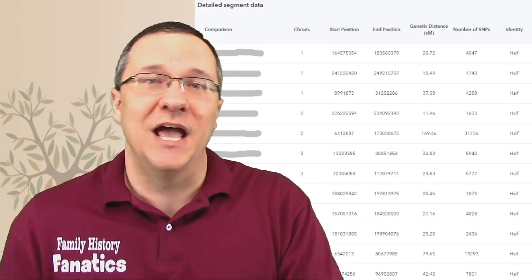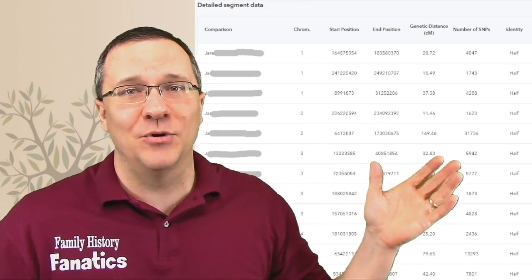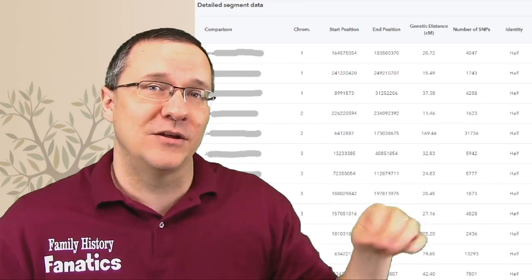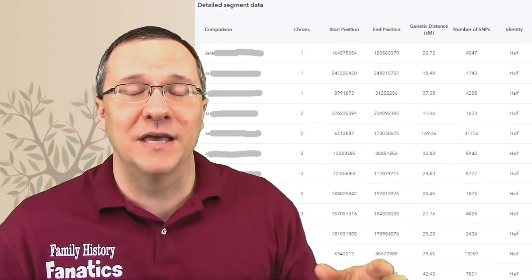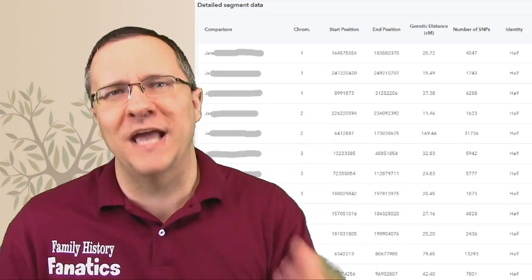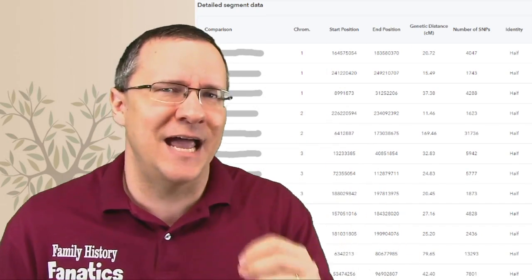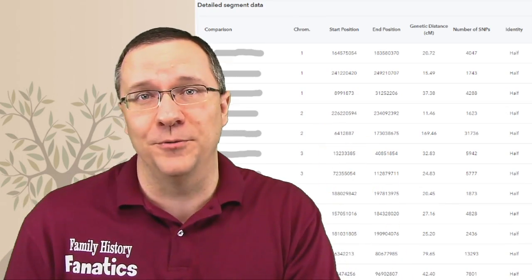At 23andMe, down below the graphic of each one of the chromosomes, there's going to be this table that shows each one of those segments, both the fully identical and the half identical. And you can just highlight all of that and copy it, paste it into a spreadsheet, or paste it into DNA Painter, or paste it anywhere else that will take this type of segment information. It's really easy, and it's all there available for you.